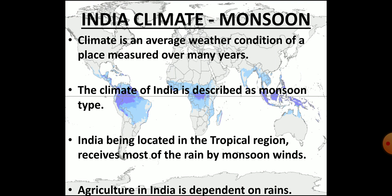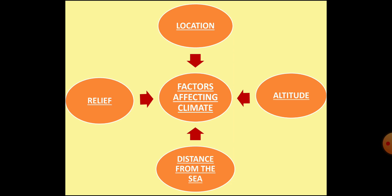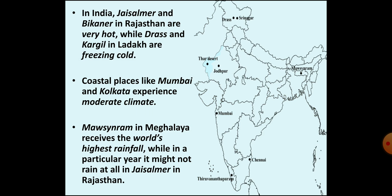This was the explanation of the four main seasons of India. The term climate means the average weather condition of a place measured over many years. India is said to have a tropical monsoon type of climate. The term monsoon is derived from the Arabic word 'mossim' meaning season. India is located in the tropical region, therefore most of the rain that India receives is brought by monsoon winds. India is an agricultural land and Indian agriculture depends upon the monsoon — good monsoon means adequate rain and a good crop.